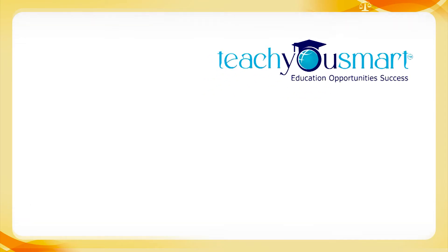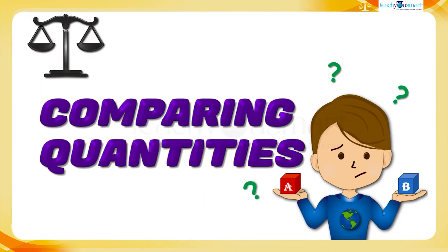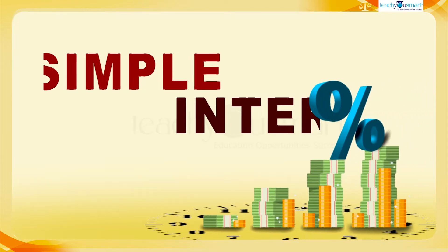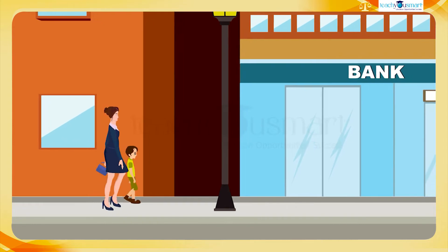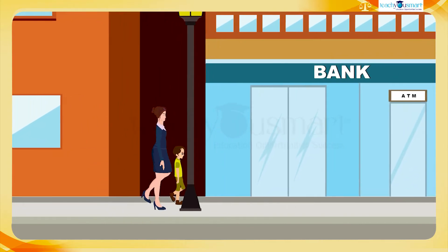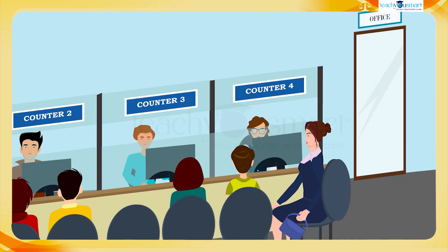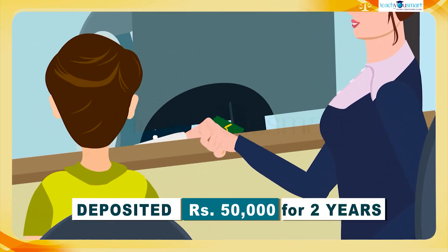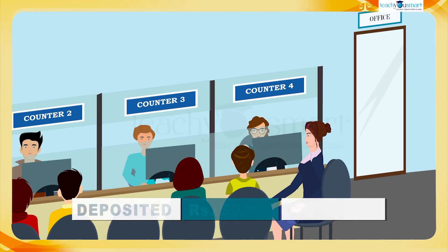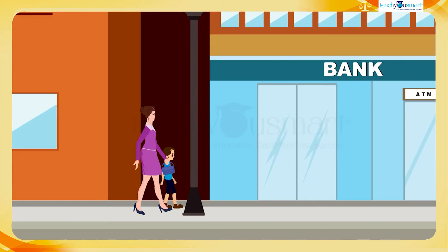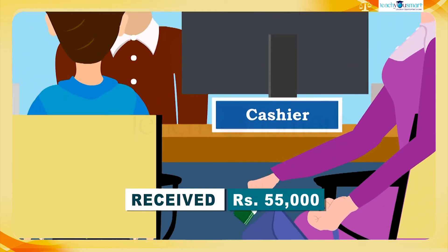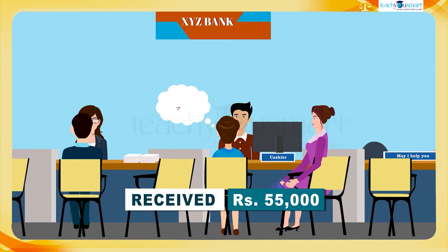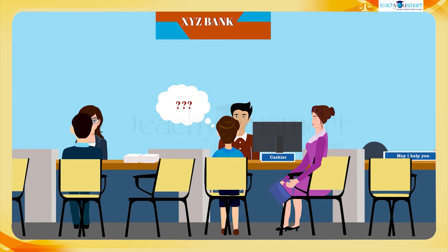Hello students, let's continue our journey through comparing quantities. Today we are going to a new topic, that is simple interest. Have you ever visited a bank? Yes, most of our parents also have an account there. One day Rohit went to a bank with his mother. She had some money to deposit in the bank. She deposited rupees 50,000 for two years. After two years, they were going to the bank for withdrawing the money. The cashier gave rupees 55,000 to them. Then Rohit had a doubt: how did it happen?